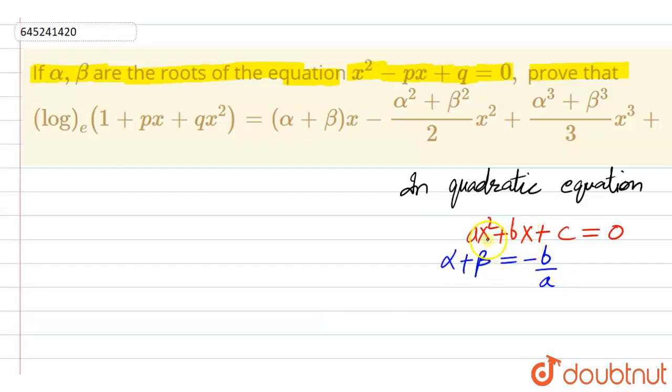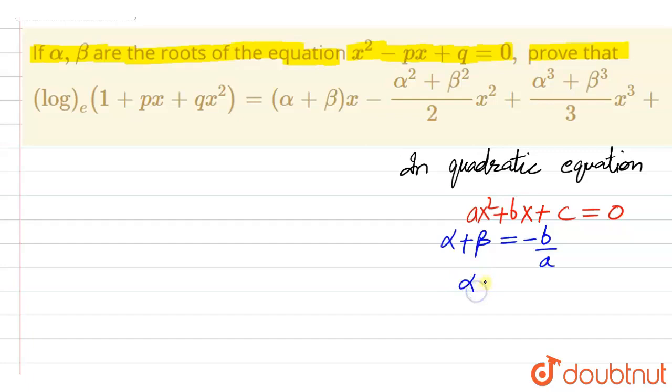The coefficient of x and coefficient of x squared, divided like this. And product of roots, that is alpha into beta, is equal to c by a.